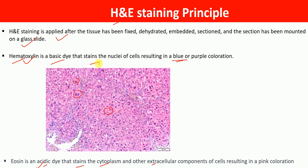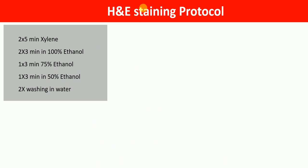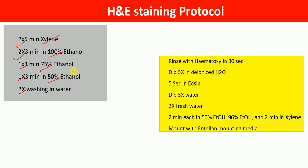The protocol for H&E staining shown here is for paraffin sections. First, the paraffin sections are placed in xylene two times for five minutes each, followed by two times three minutes in 100% ethanol, one times three minutes in 75% ethanol, one times three minutes in 50% ethanol, and finally two washes in water.